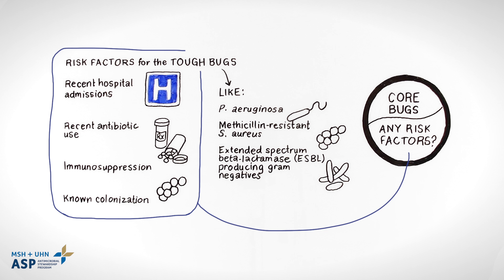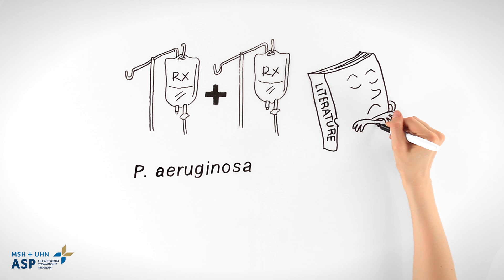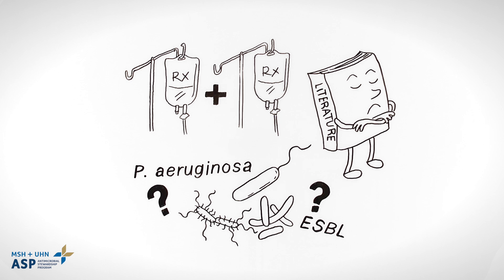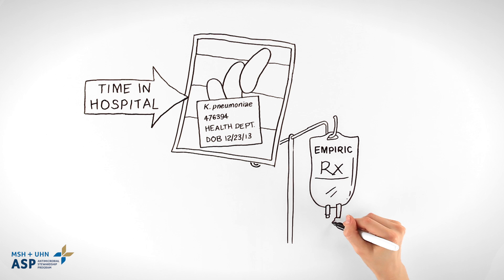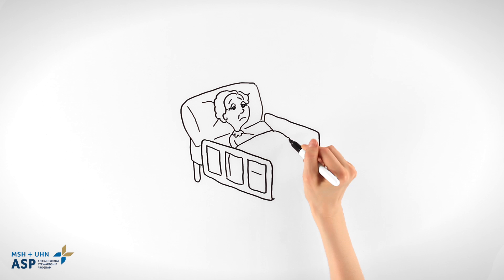Empiric therapy should target the core bugs and account for these risk factors. Combination therapy for Pseudomonas infections is common but not supported by the literature. Only if you are worried about Pseudomonas or other multi-drug resistant organisms is it reasonable to start with empiric combination therapy. For most patients, a single antimicrobial is sufficient. Once you have a bug identified, or if cultures remain negative at 48 hours, narrow or target therapy for the remaining treatment.